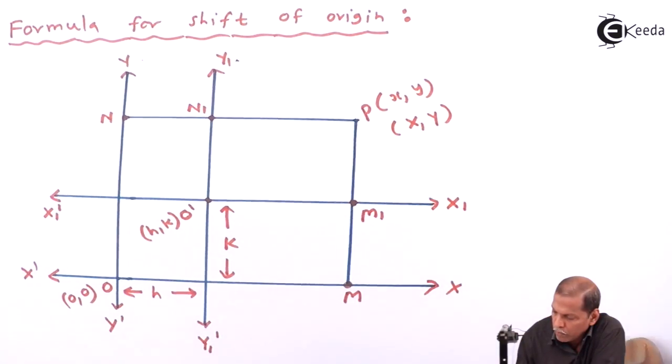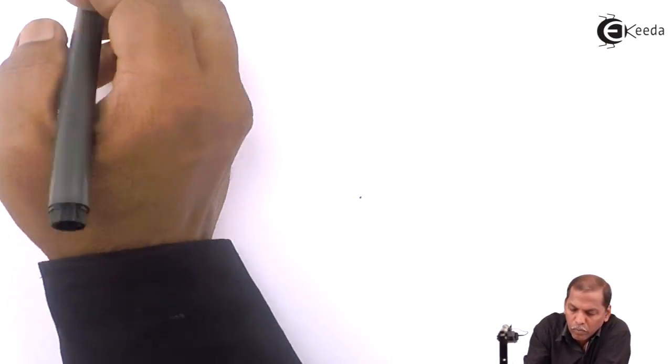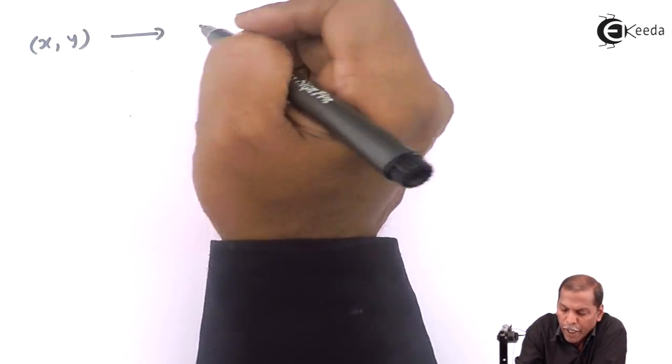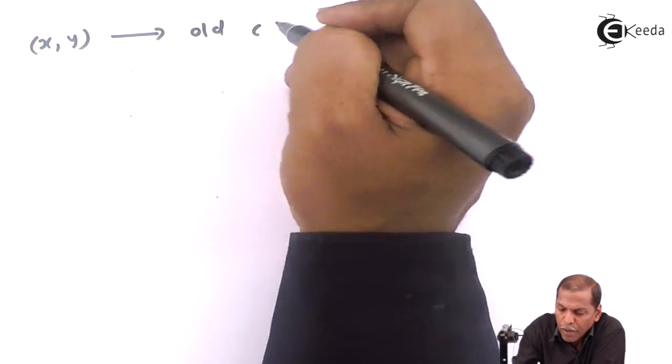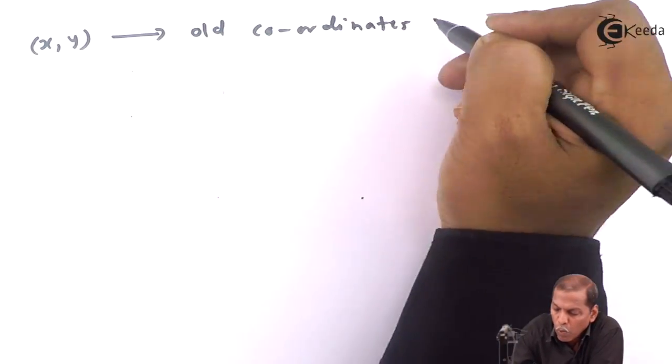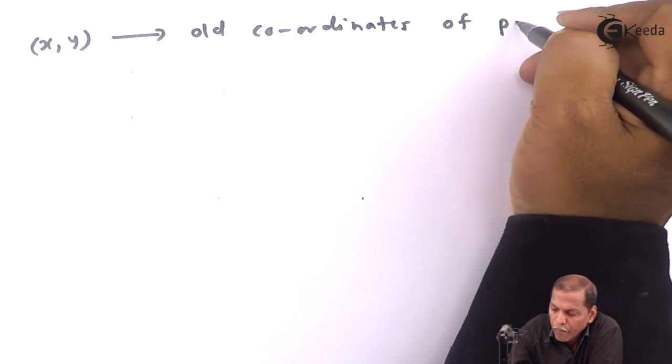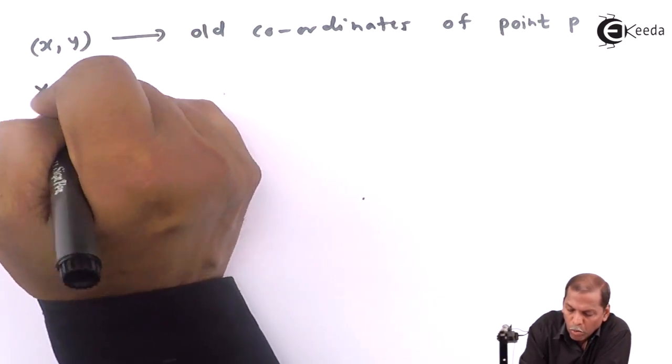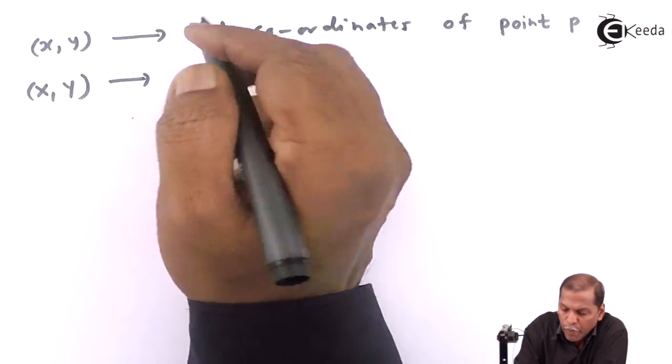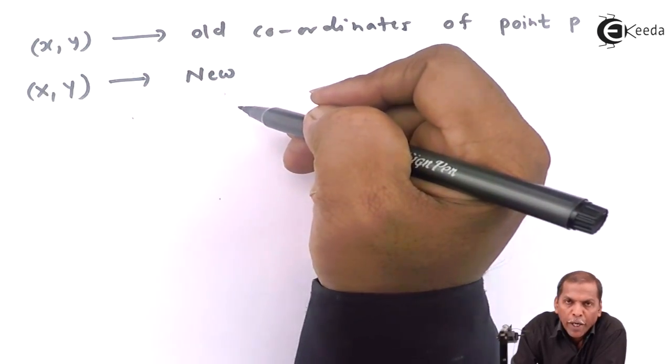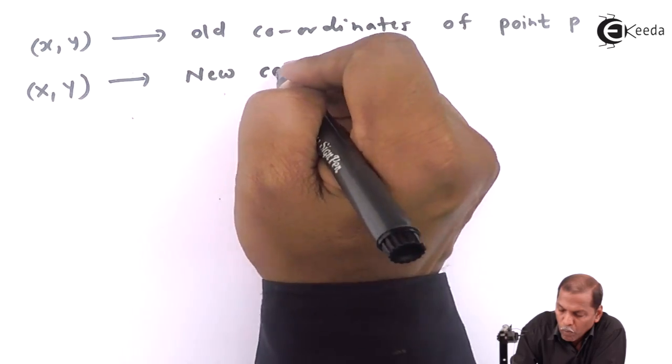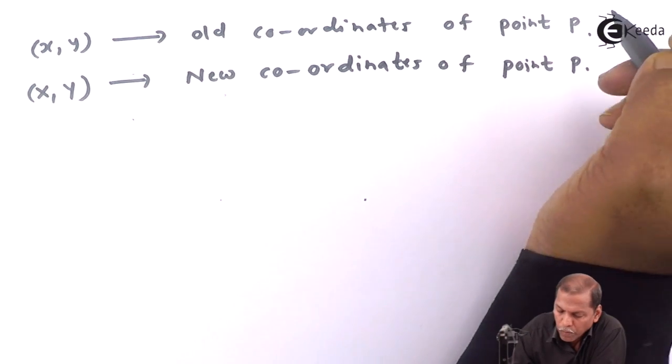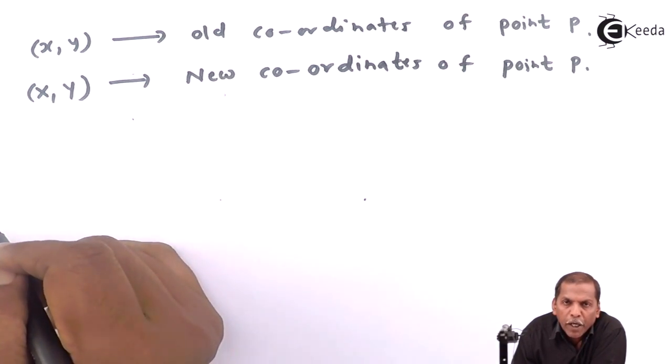Small x,y represent old coordinates of point P. Capital X,Y represent new coordinates of point P. h,k represent the shift of origin.